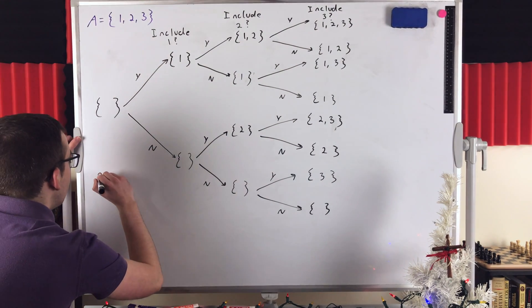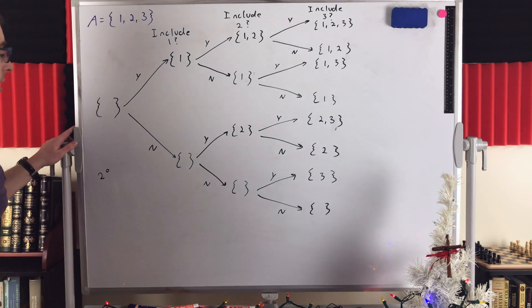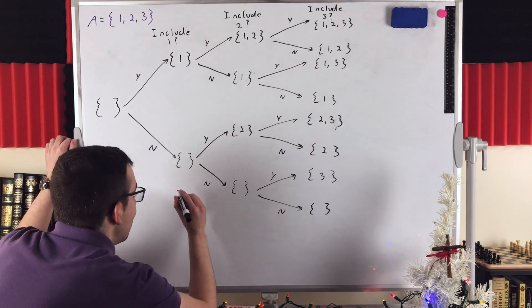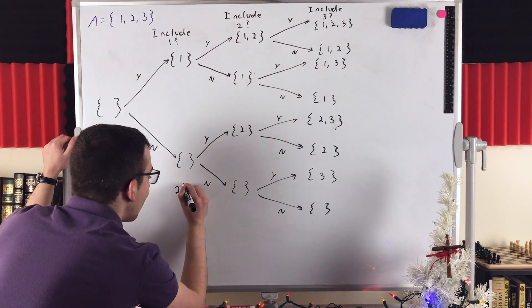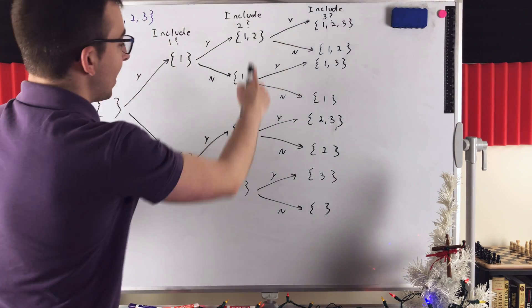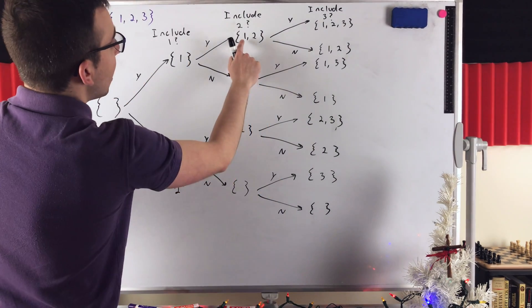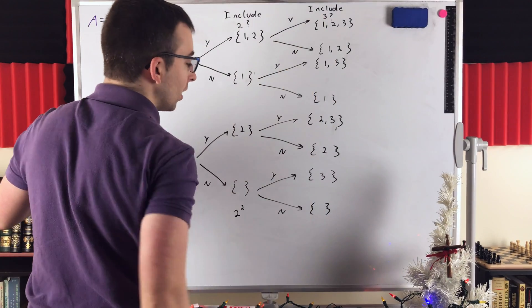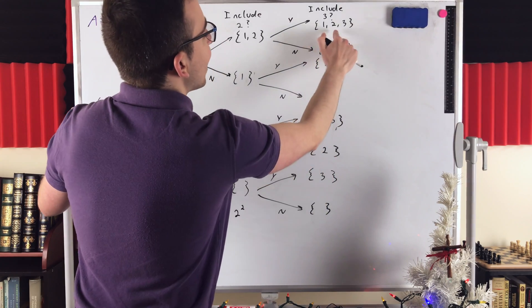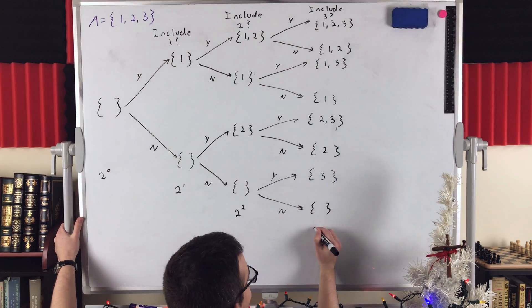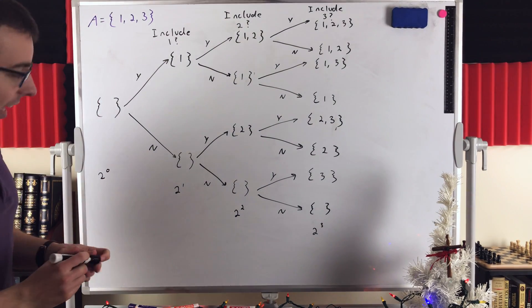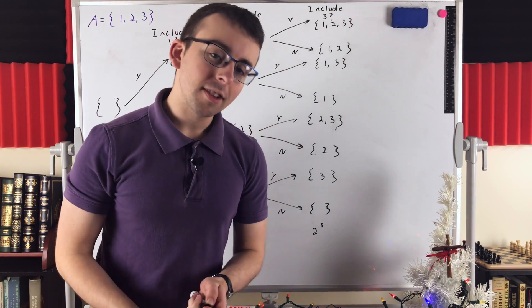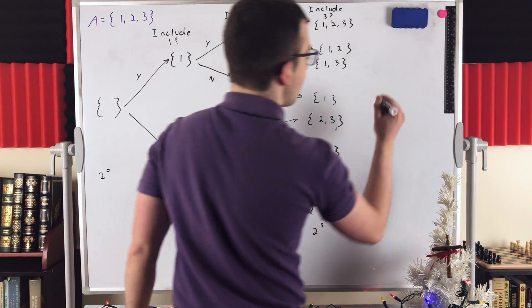Here, the total number of sets is 2 to the power of 0, and these are all of the subsets of a set with 0 elements. Here we've got 2 sets — these are the subsets of a set with just 1 element. There are 2 such subsets. This column contains all of the subsets of a set with 2 elements — there are a total of 2 to the power of 2 subsets. And then this column contains all of the subsets of a set containing 3 elements, and there are 8 total subsets here — that's 2 to the power of 3. And then we've got our beautiful formula: the total number of subsets of a set with n elements is 2 to the power of n.